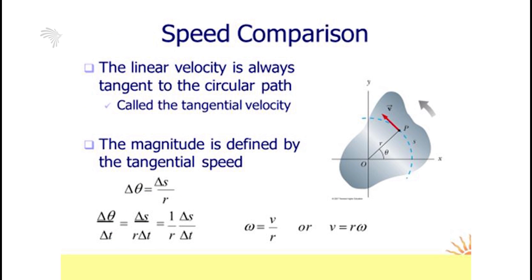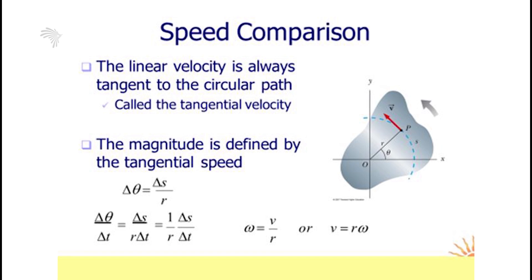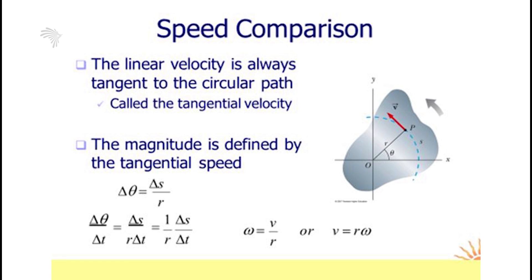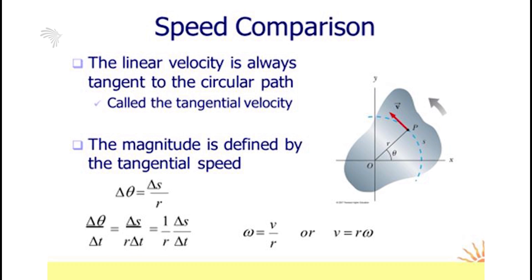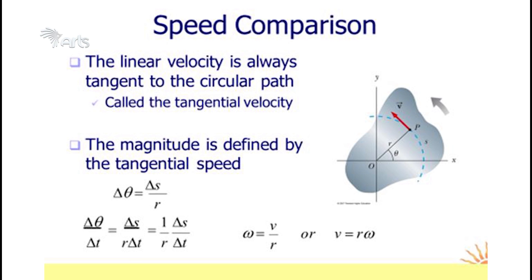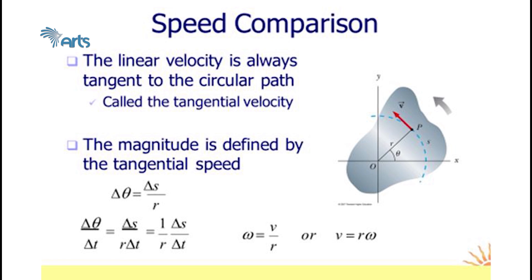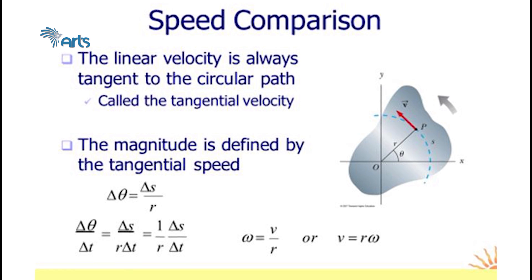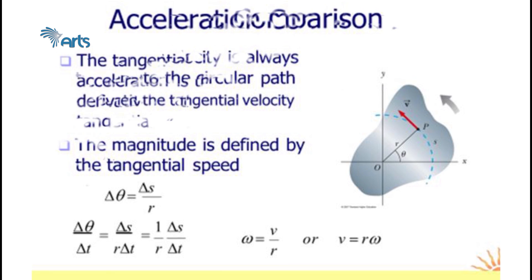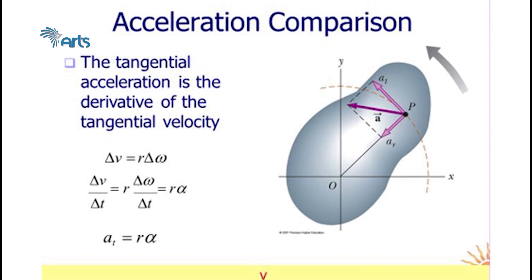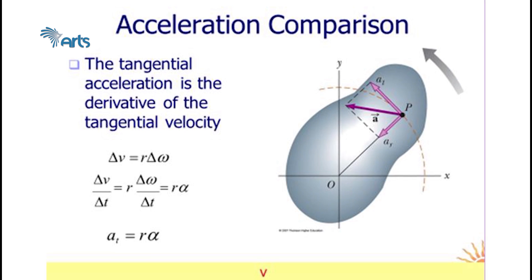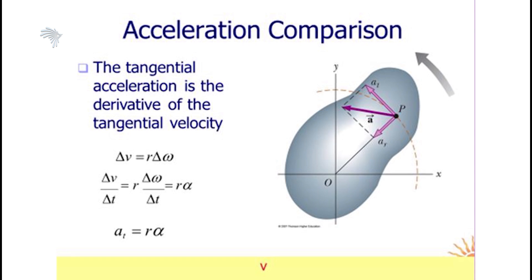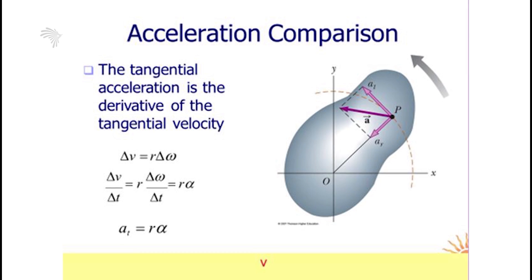For speed comparison, linear velocity is always tangent to the circular path, called tangential velocity, denoted by v. Since change in theta equals change in s over r, dividing both sides by time gives: Δθ/Δt equals (1/r)·(Δs/Δt). Here, Δθ/Δt is omega and Δs/Δt is tangential velocity v. So the tangential velocity v equals r times omega. Similarly, the tangential acceleration equals radius r times angular acceleration alpha.